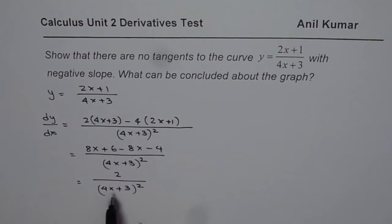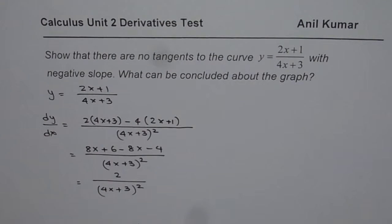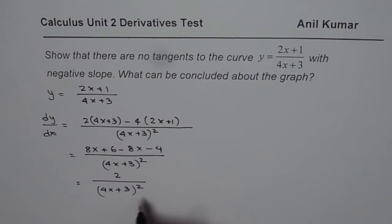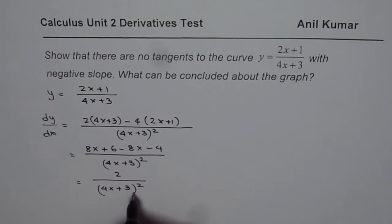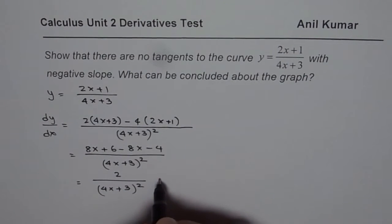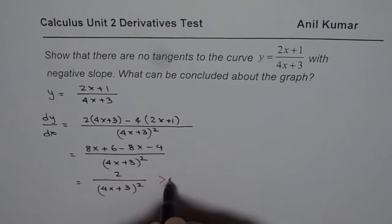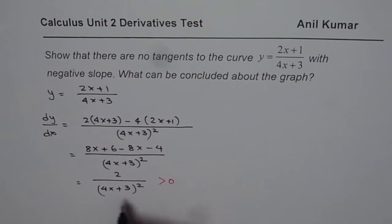Now you can see the square in the denominator is always positive, and the number 2 in the numerator is also positive. So this derivative is always greater than 0 — always positive.